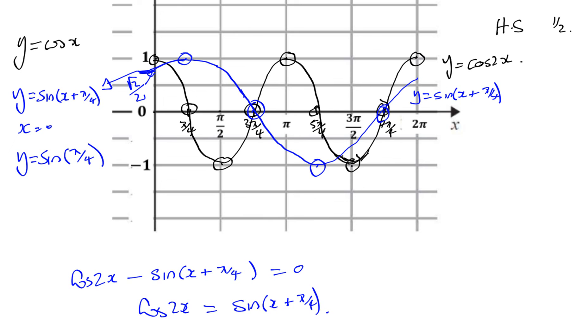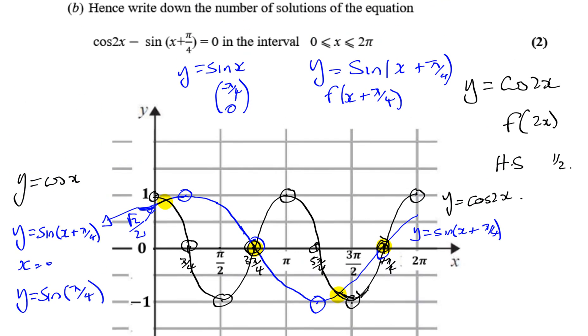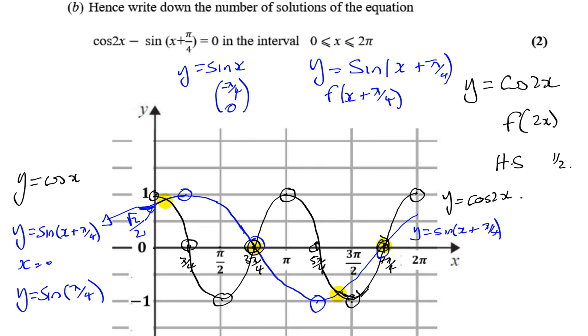So we can see visually from the graph, they intersect at 1 point, at 2 points, at 3 points, and at 4 points within 0 to 2π. Okay, so the answer for part B is there are 4 solutions. That's the answer to part B.